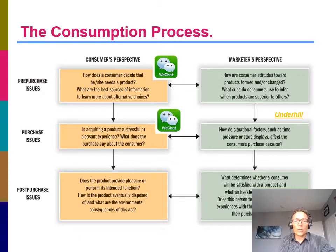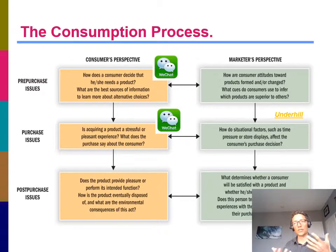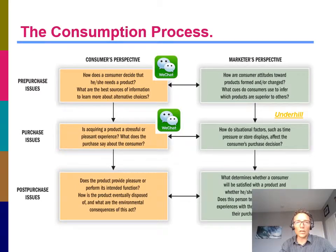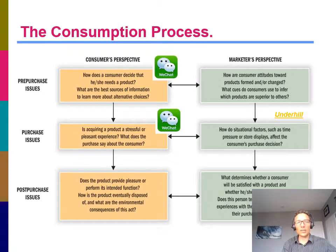Any good consumer behavior lecture starts with the consumption process. As consumers, there's a three-part evaluation process: pre-purchase considerations, the actual purchase, and post-purchase issues. Marketing plays a role in each stage. Pre-purchase, we're trying to get consumers to decide to buy our product. During the purchase, we're encouraging that purchase and perhaps additional ones. Think of when you've bought a car from a dealer.